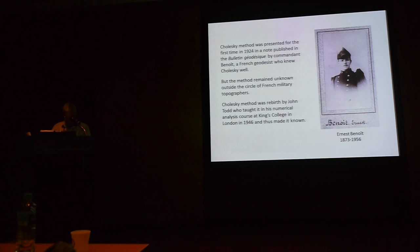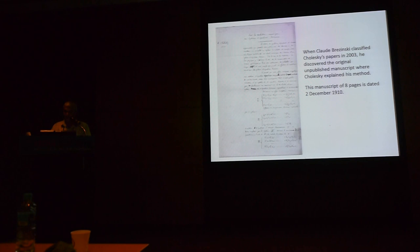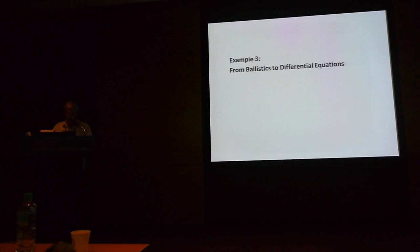Cholesky's method was reborn by John Todd, who taught it in his numerical analysis course at King's College in London in 1946, and thus made it known. When Claude Brezinski classified Cholesky's papers in 2003, he discovered the original unpublished manuscript where Cholesky explained his methods. The manuscript of eight pages is dated to December 1910. This was an important discovery for the history of numerical analysis.